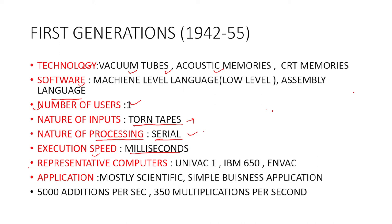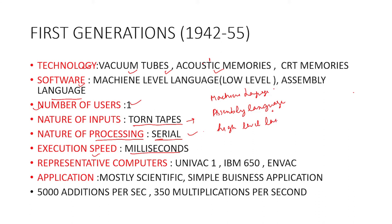There are three types of programming languages. The first is machine level language, the second is assembly language, and the third is high level language.